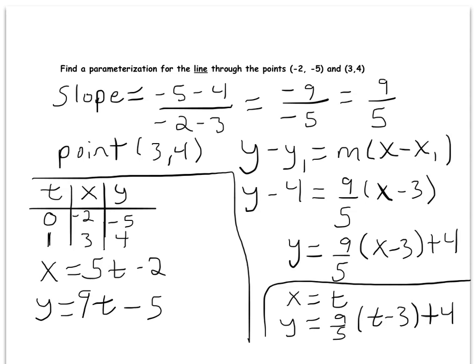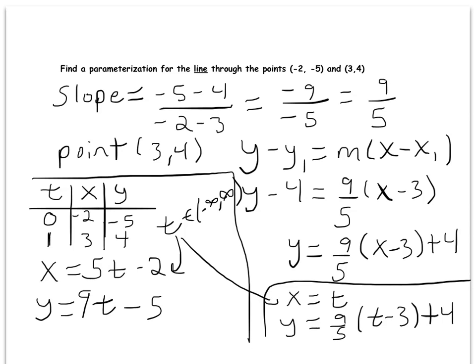Some problems ask for a parametrization of a particular segment, and this table method is really nice for that. If I specifically make t an element of the closed interval [0, 1], then my parametrization describes just the segment with endpoints (negative 2, negative 5) and (3, 4). If I make t an element of negative infinity to infinity, that parametrizes the entire line. Since this problem says I'm parametrizing the line, I should specify t is on the interval negative infinity to infinity for both parametrizations.